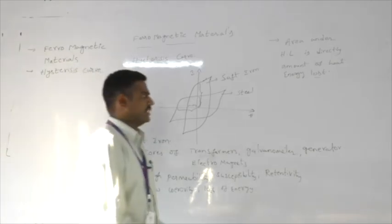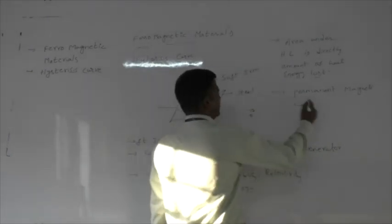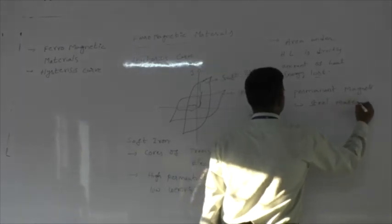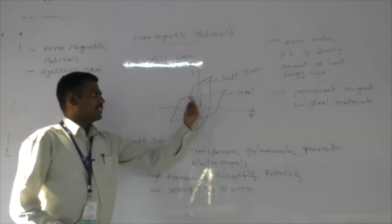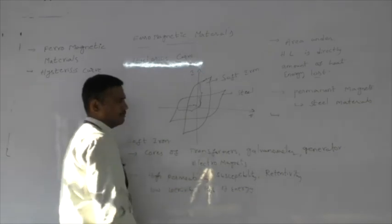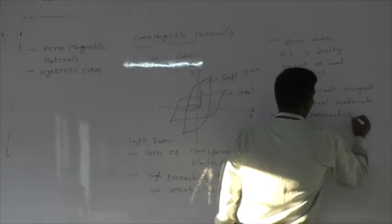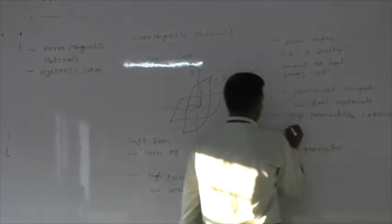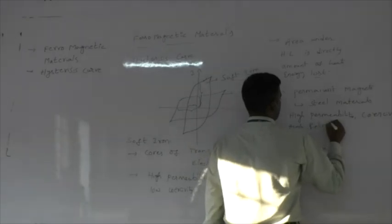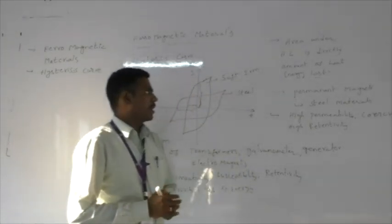Steel is widely used for preparing permanent magnets. This is because steel has a high value of retentivity and high coercivity. Permanent magnets should be prepared with materials of high permeability, high coercivity, and high retentivity, which are all properties satisfied by steel materials.